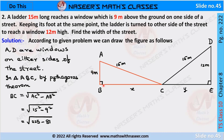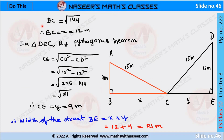In triangle ABC, by Pythagoras theorem, BC equals the square root of AC square minus AB square. AC is 15 and AB is 9, so we get root of 225 minus 81, which equals root of 144. Therefore BC equals 12 meters.